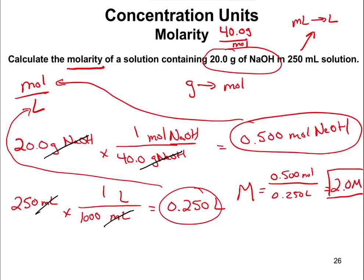There are a lot of conversions here, so understanding the definitions is key. One of the big tricks in this problem is using the periodic table to find the molar mass of NaOH. The formula weight and the molar mass are the same thing.